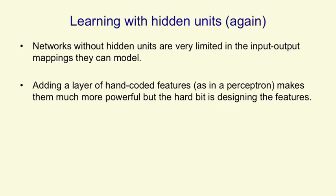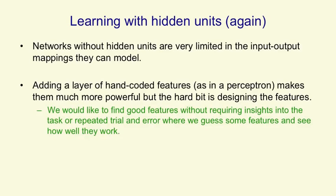If you have neural networks without hidden units, they're very limited in the input-output mappings they can model. If you add a layer of hand-coded features, as in a perceptron, you make the net much more powerful, but the difficult bit for a new task is designing the features. The learning won't solve the hard problem — you have to solve it by hand. What we'd like is a way of finding good features without requiring insights into the task or repeated trial and error where we guess some features and see how well they work.